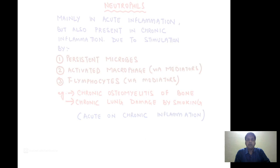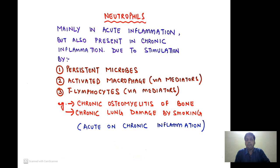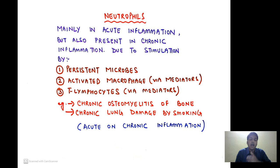Neutrophils are mainly involved in acute inflammation but are also present in chronic inflammation because of stimulation caused by persistent microbes, activated macrophages, and T lymphocytes releasing mediators. Examples of conditions where neutrophils are involved in chronic inflammation include chronic osteomyelitis of the bone and chronic lung damage caused by smoking — these are examples of acute-on-chronic inflammation.